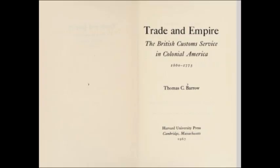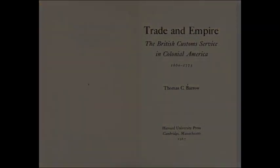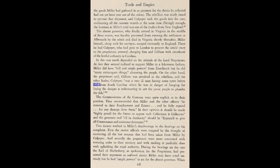The book we get our example from is called 'Trade and Empire: The British Custom Service in Colonial America, 1660 to 1775' by Thomas C. Barrow, 1967, Harvard University Press. On page 26 it states the absent governor who finally arrived in Virginia in the middle of these events was forcibly prevented from entering the settlement at Albemarle by the rebels.